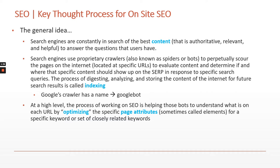Understanding that that's what search engines are doing, our job as marketers and people working in SEO is to help not just humans, but also those bots and spiders, to understand our content by optimizing our content at those different URLs. That's where SEO comes in. We need to understand what those specific page attributes are that we need to optimize.